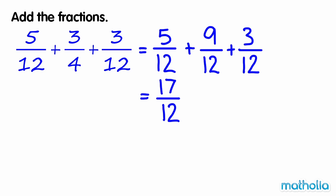17 12ths is an improper fraction. We can write it as the mixed number 1 and 5 12ths. So 5 12ths plus 3 quarters plus 3 12ths is equal to 1 and 5 12ths.